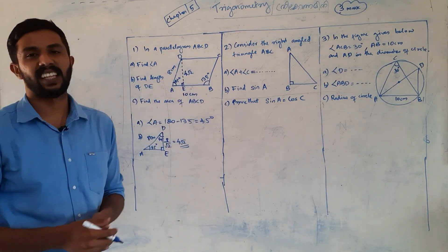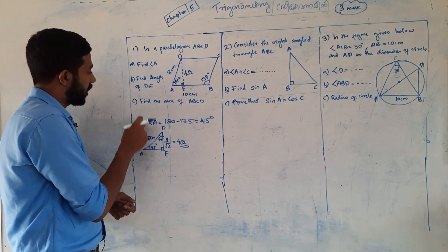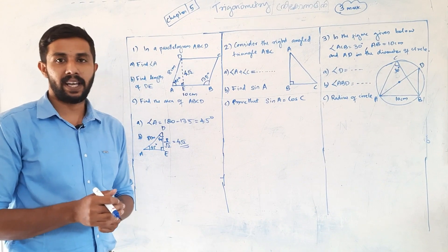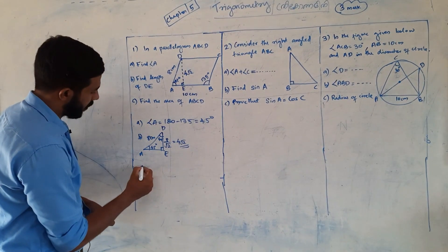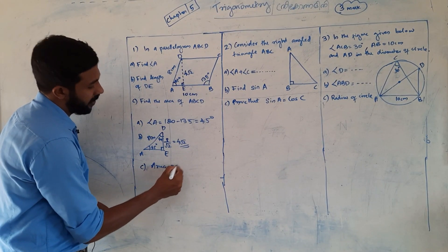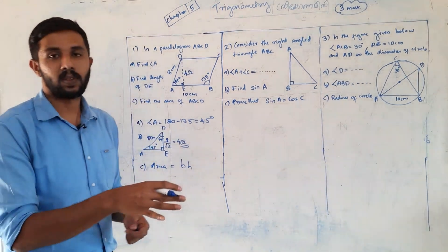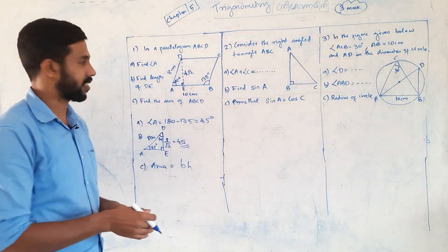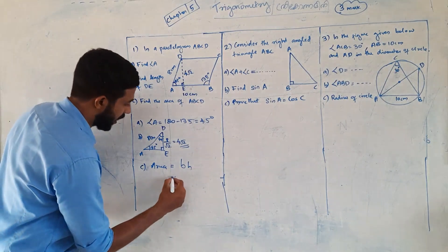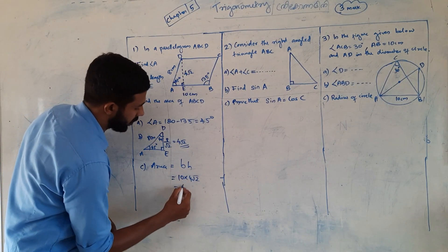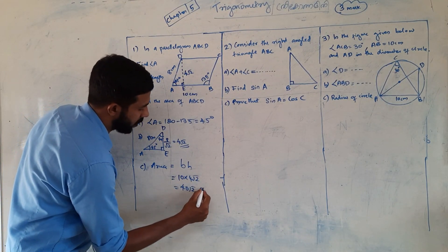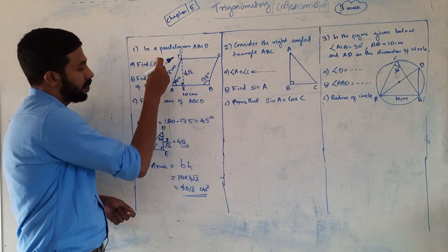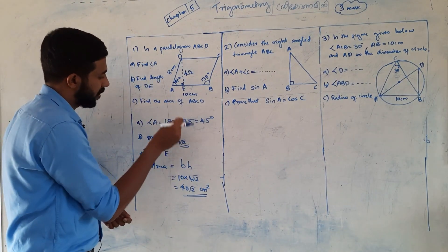Here is the C question: find the area of ABCD. ABCD is a parallelogram. The area of a parallelogram is base times height — it is called B×H. The base is 10 cm. The root trend gives 4 root 2, leading to 40 root 2. The square of that gives 40 cm².